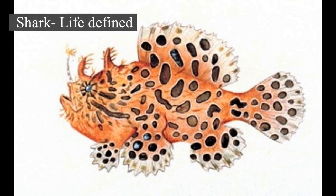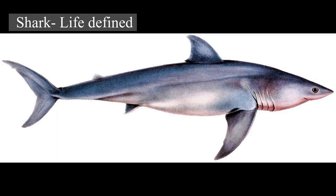Sharks are a group of elasmobranch fish characterized by a cartilaginous skeleton, five to seven gill slits on the sides of the head, and pectoral fins that are not fused to the head. Modern sharks are classified within the clade Selachomorpha or Selachii and are the sister group to the rays. However, the term shark is also used to refer to extinct shark-like members of the subclass Elasmobranchii, such as hybodonts, that lie outside the modern group.